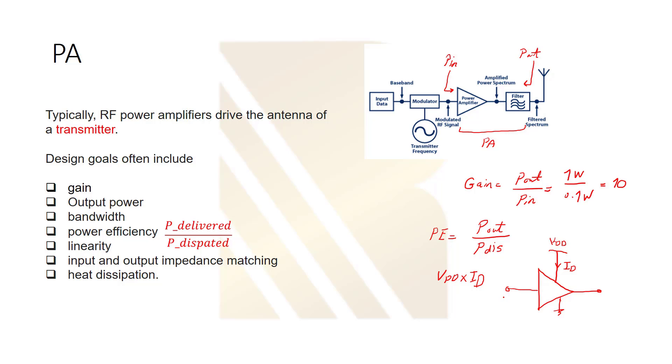So, our power amplifier consumes this power in order to amplify our signal. What is the goal here? We want to increase our output power and decrease our dissipated power. So, we will have better PE. So, this is very important in designing a power amplifier. We always try to increase our power efficiency. We always want to get high gain and high output power with a minimum dissipated power.